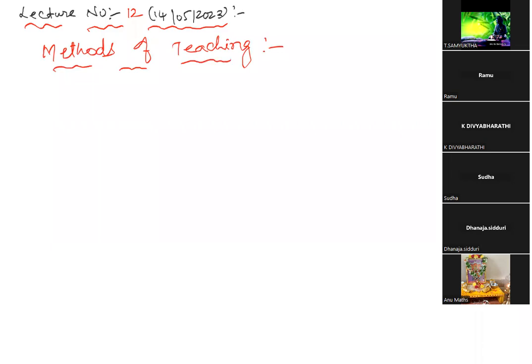In this chapter, we have three concepts: Methods of Teaching, Approaches of Teaching, and Strategies of Teaching. We need to discuss them individually, as each is a separate topic. You might be thinking that methods, approaches, and strategies are all equal, but methods is different from approaches, approaches is different from techniques, and techniques is different from strategies.